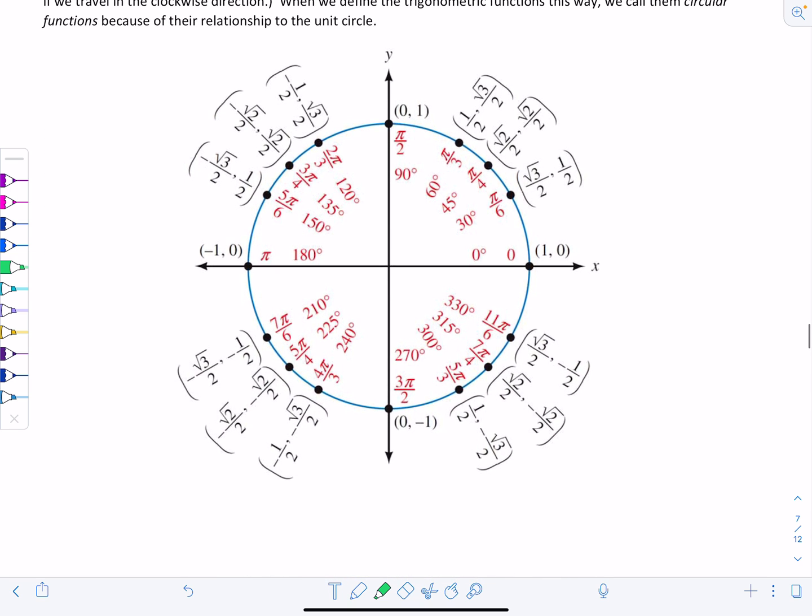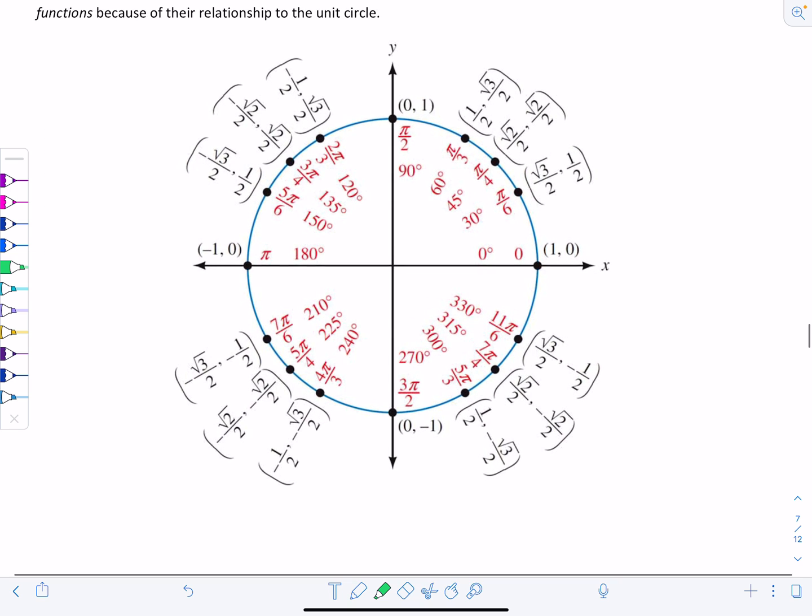Here's a completed unit circle. At 30 degrees, which is equal to pi over 6 radians, rad 3 over 2 comma 1 half are the coordinates of this point on the unit circle. Notice they precisely give us the value of cosine of 30 degrees and sine of 30 degrees. Cosine of 30 degrees equals rad 3 over 2, and sine of 30 degrees equals 1 half.